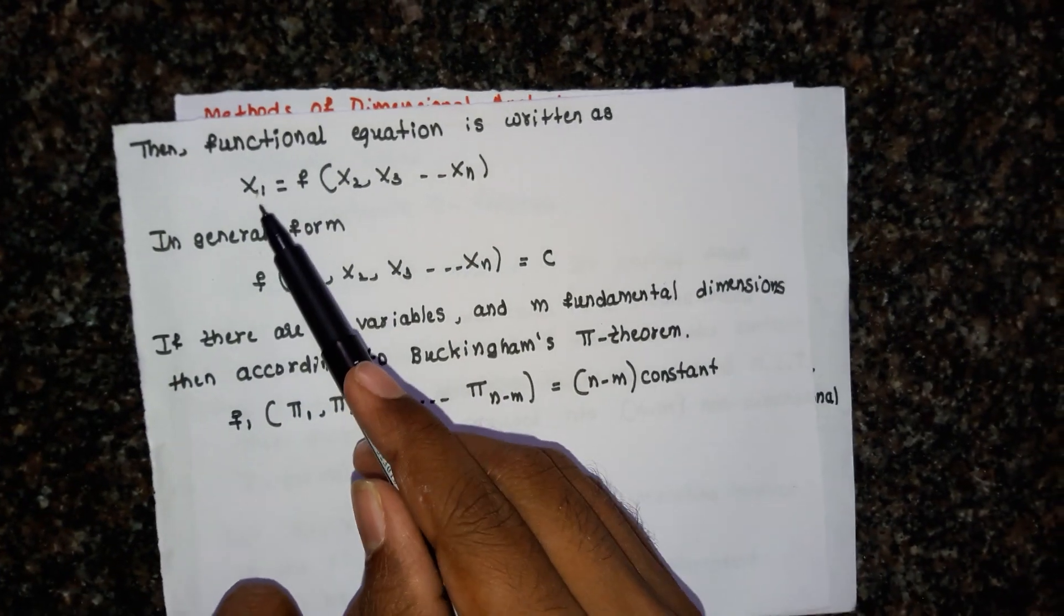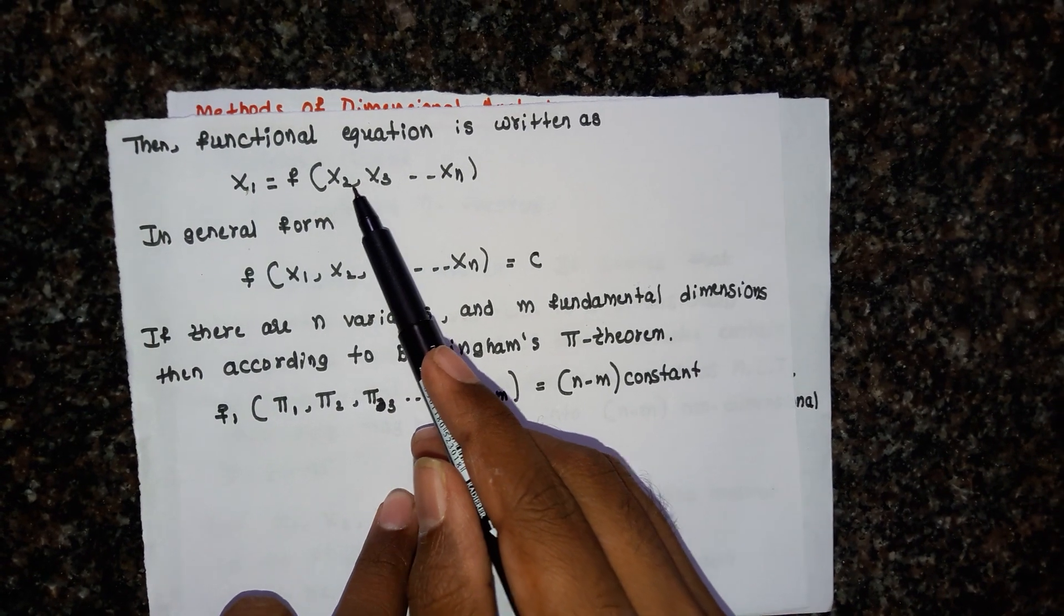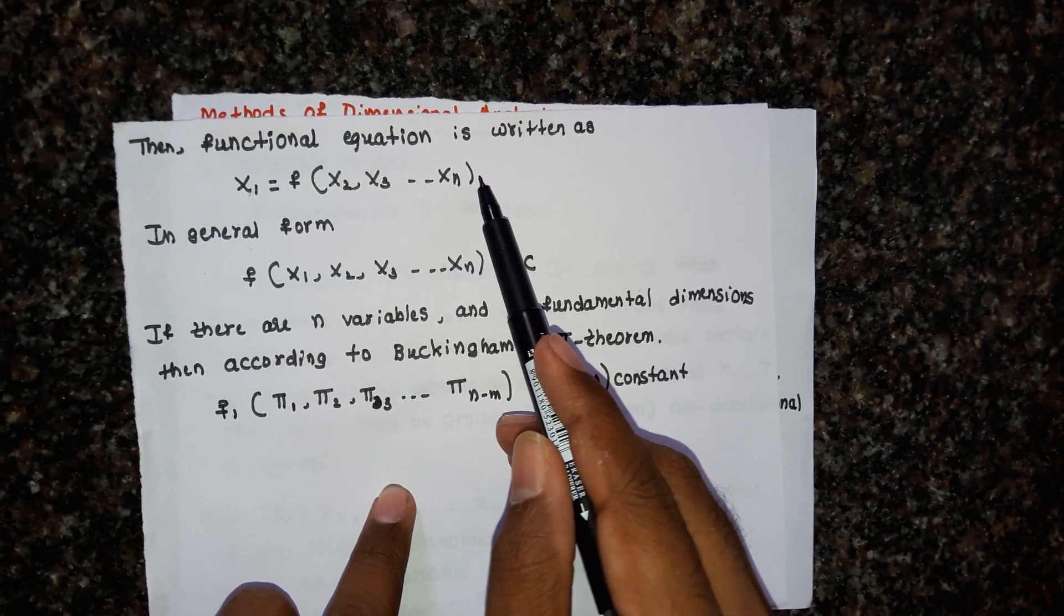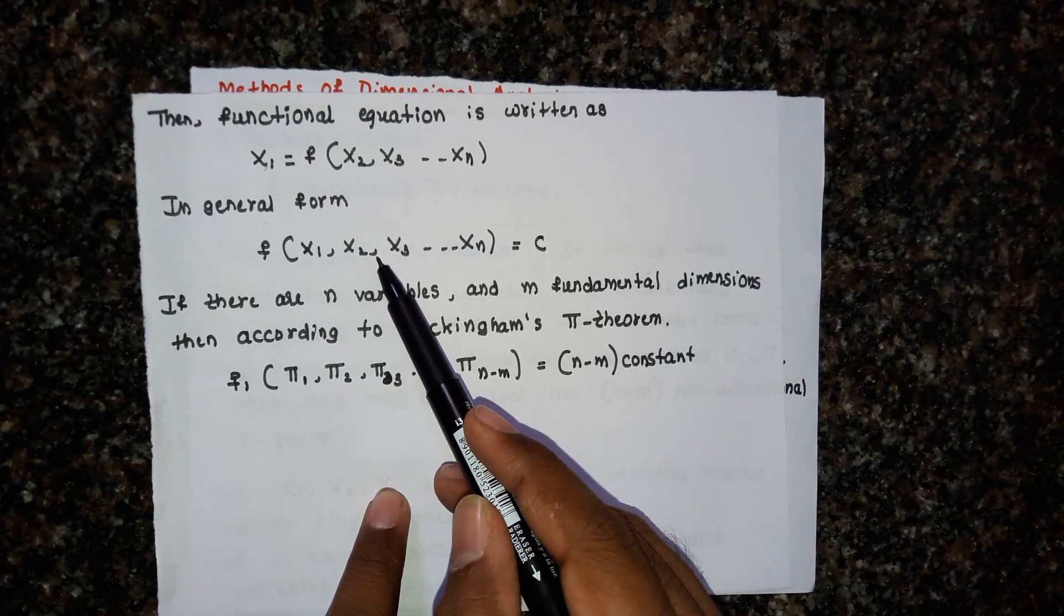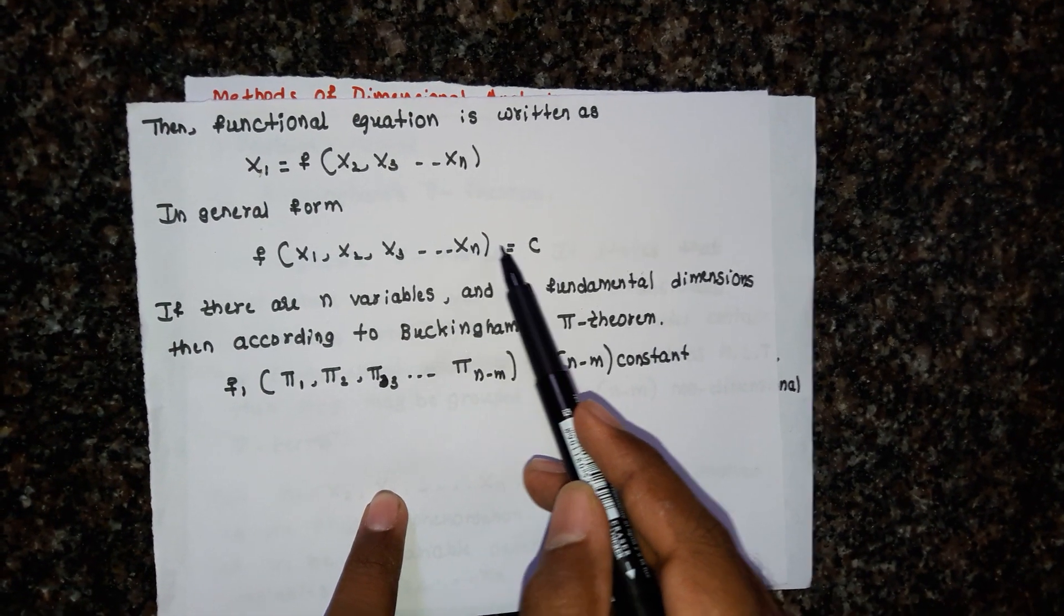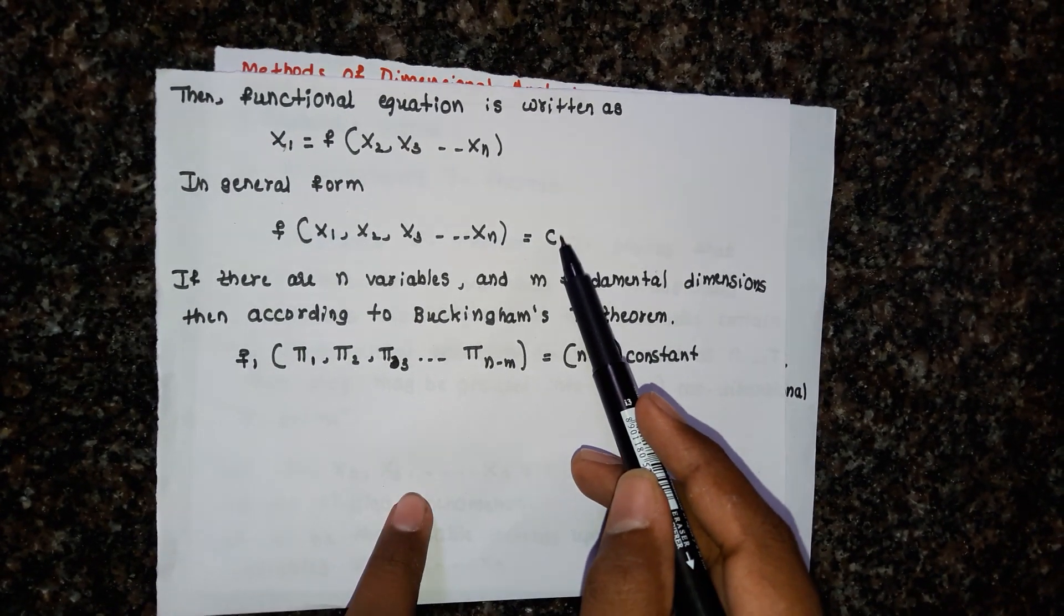Then the equation may be written as x1 is a function of x2, x3, up to xn. In general form, f of x1, x2, x3, up to xn equals c, where c is constant.